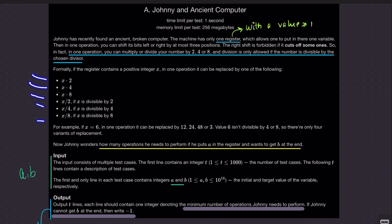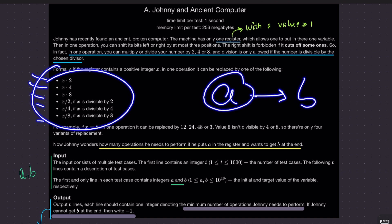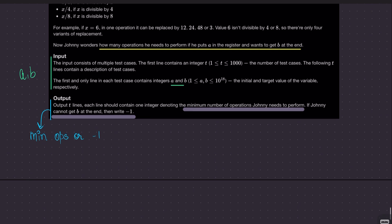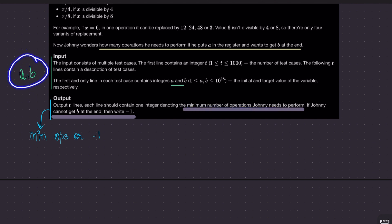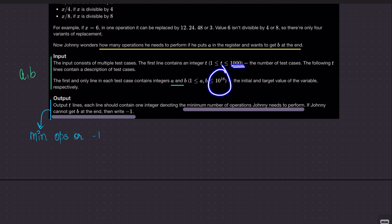The operations are: multiply by 2, multiply by 4, multiply by 8, divide by 2, divide by 4, or divide by 8 — but when dividing, the number must be divisible by that divisor. We want the minimum number of operations to convert A to B. If it's impossible, print -1. Looking at the constraints, values go up to 10^18 and there are up to 1000 test cases, hinting at a constant-time or logarithmic solution.